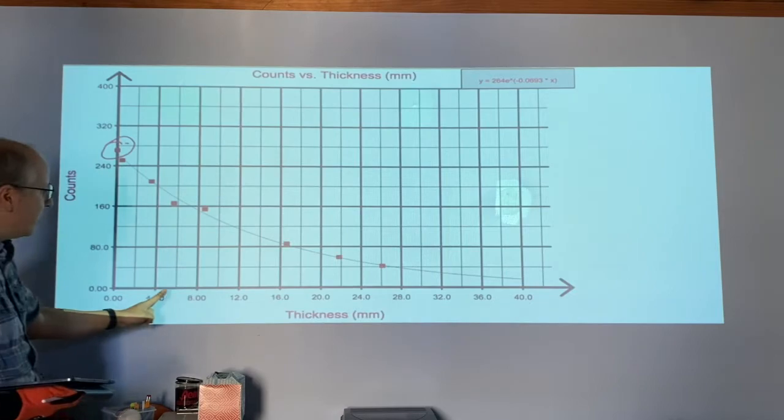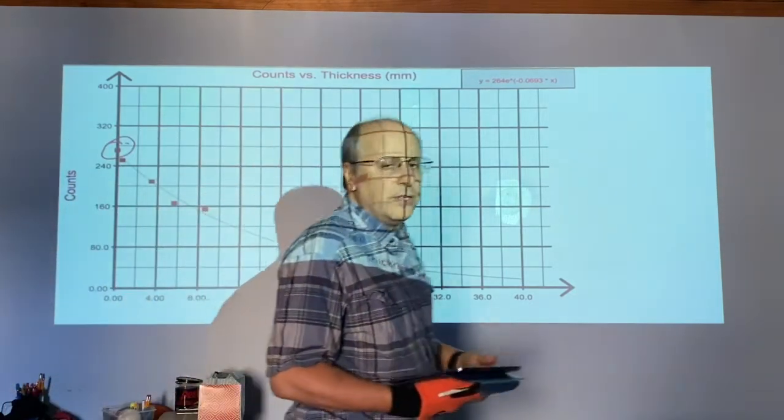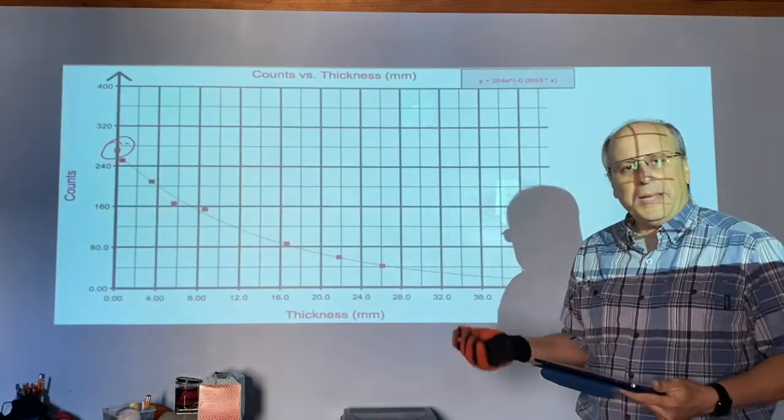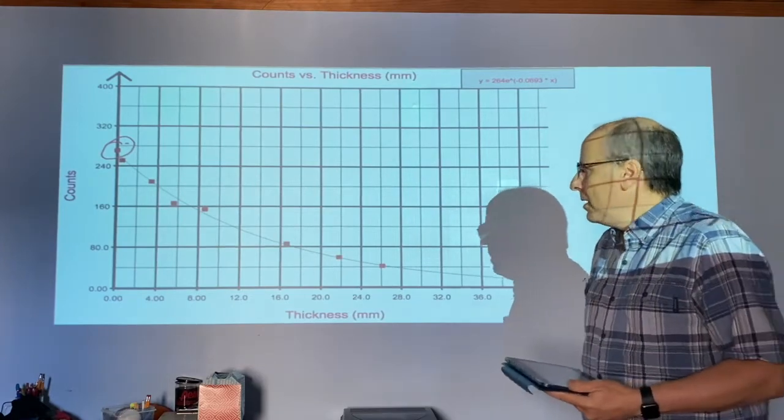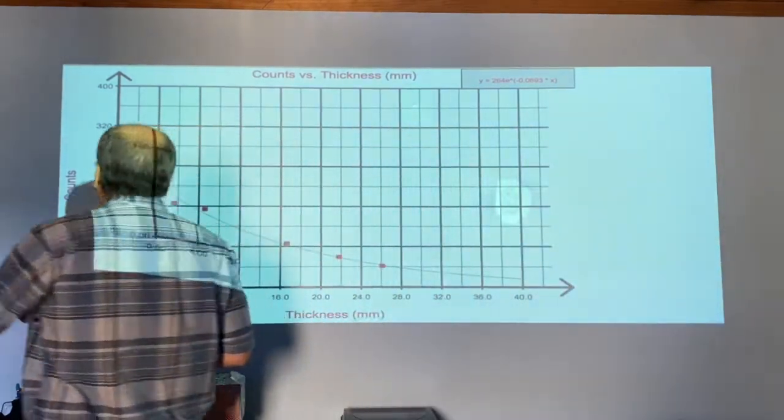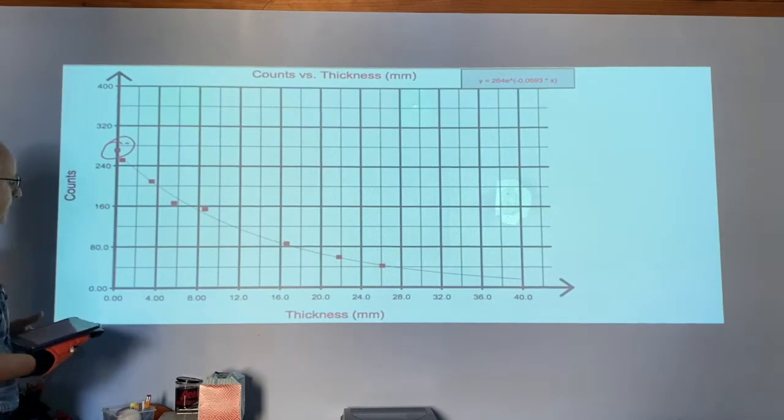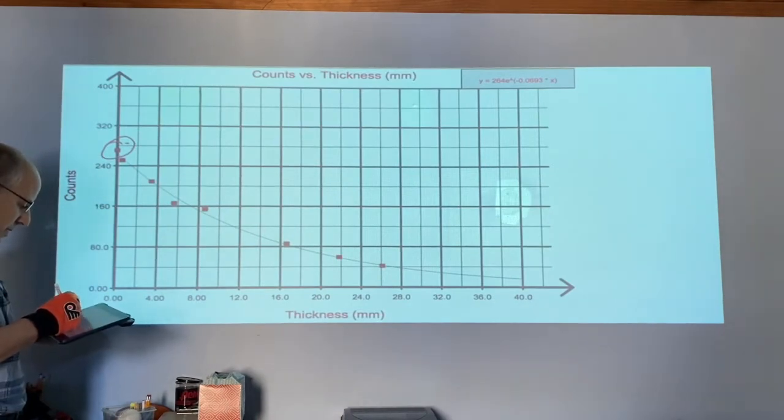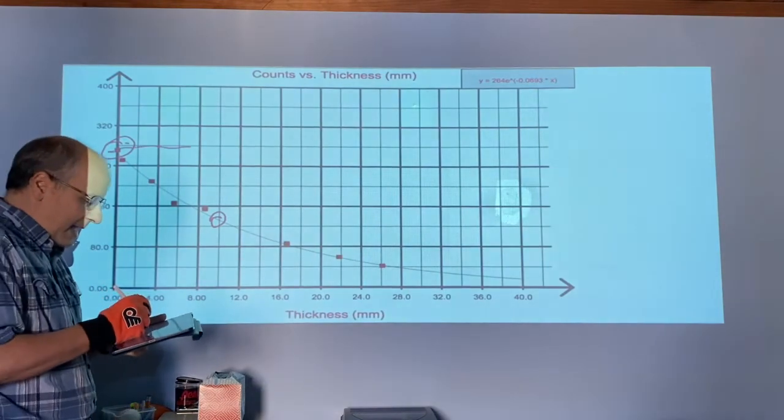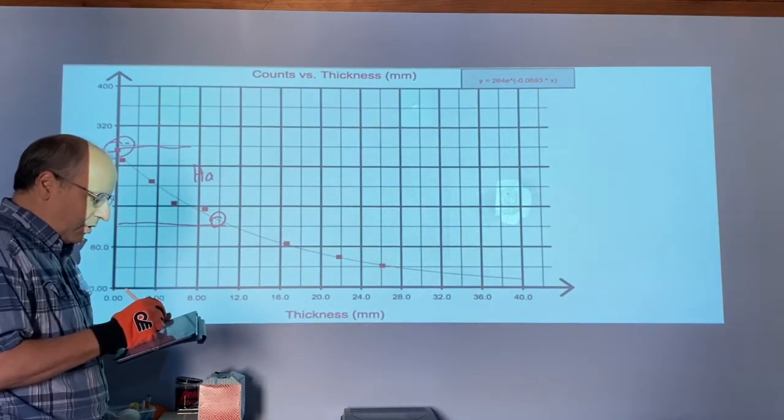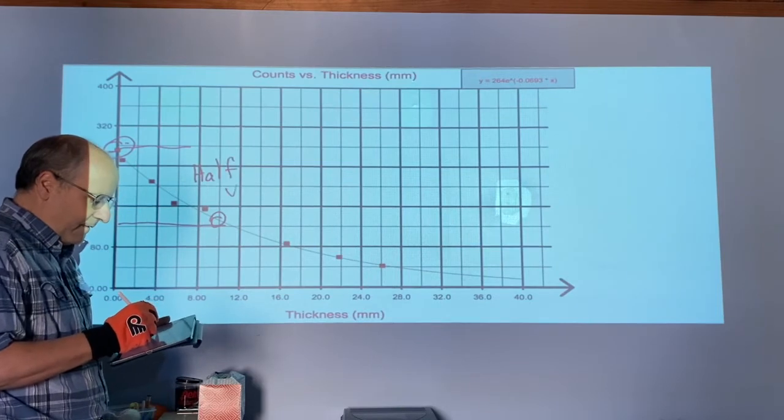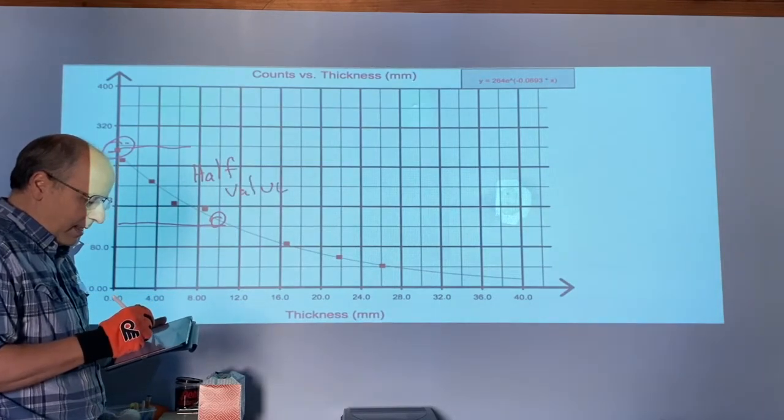You'll notice that the thicker I make my barrier, the lower the odds of the radiation making it through. If you take a look at where you start and you cut it in half, so you block half of the radiation, this is called the half value layer.